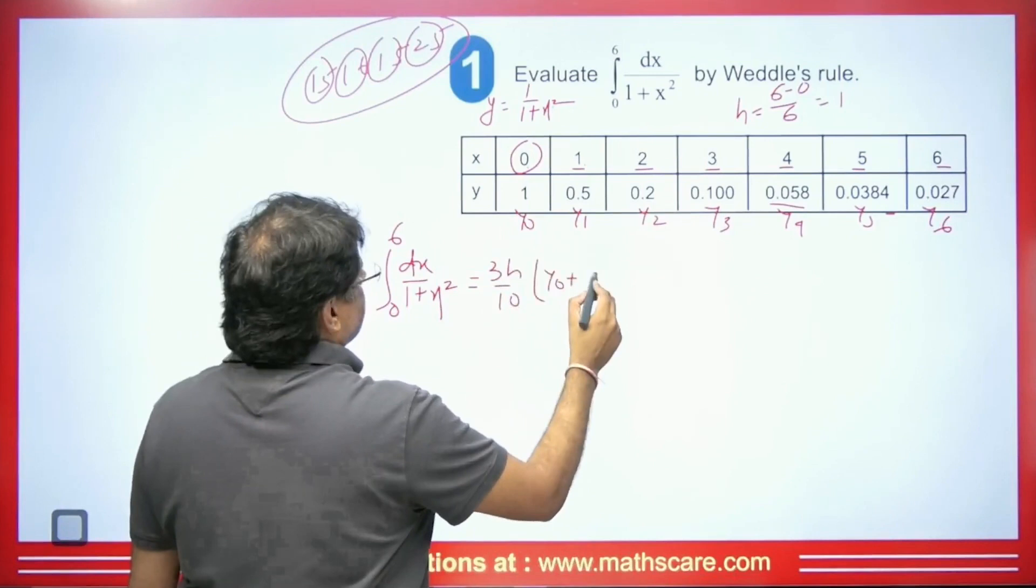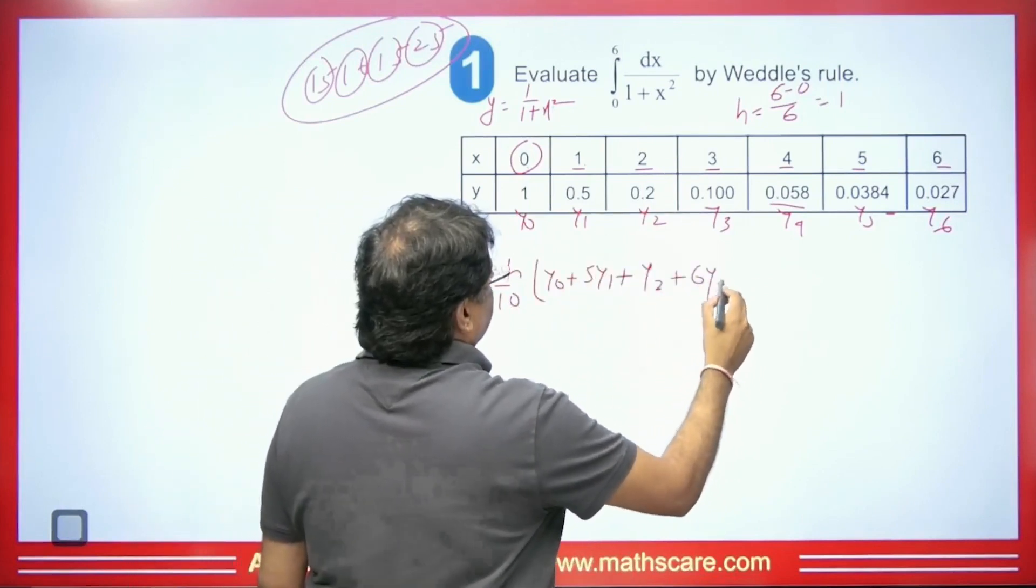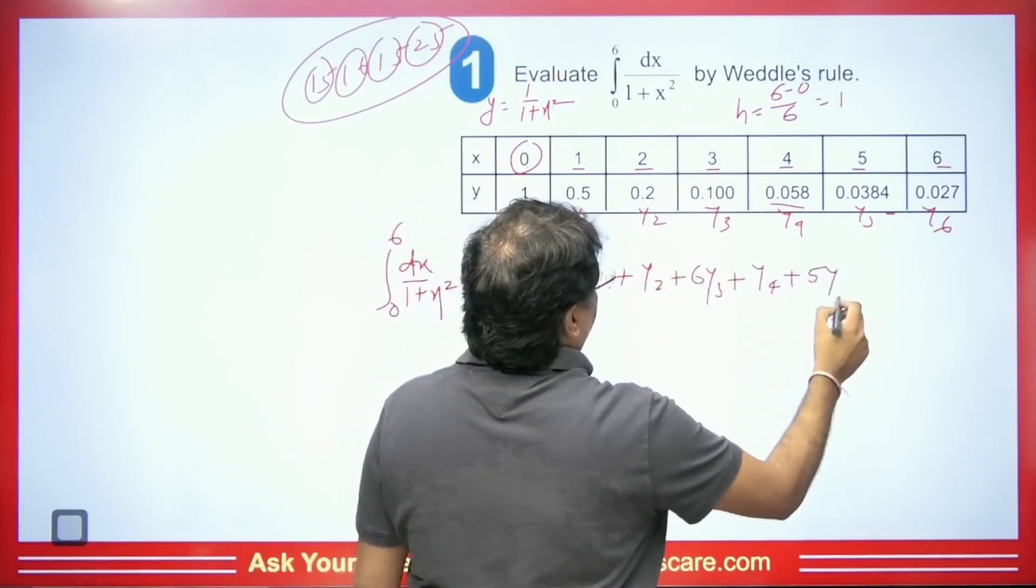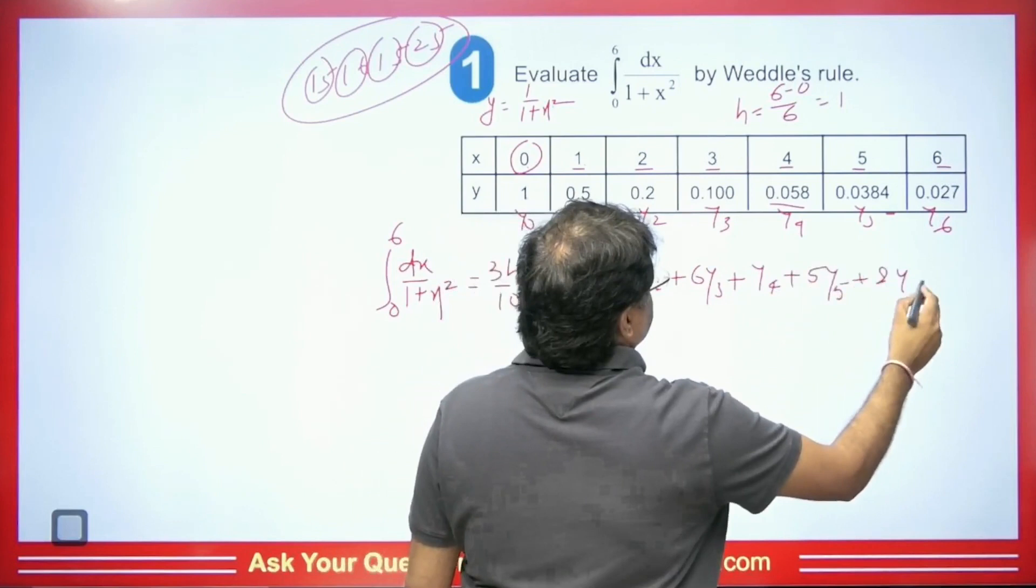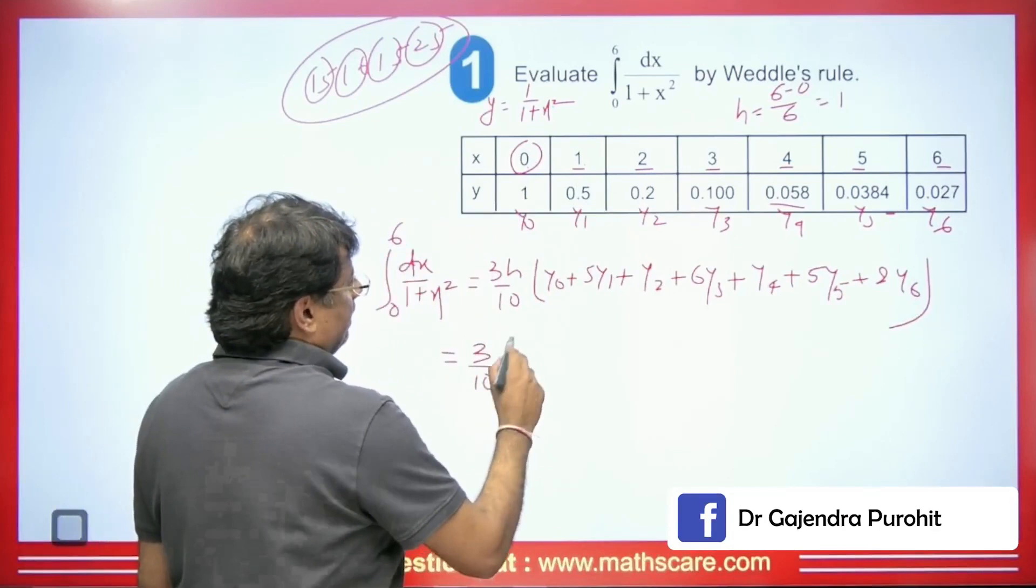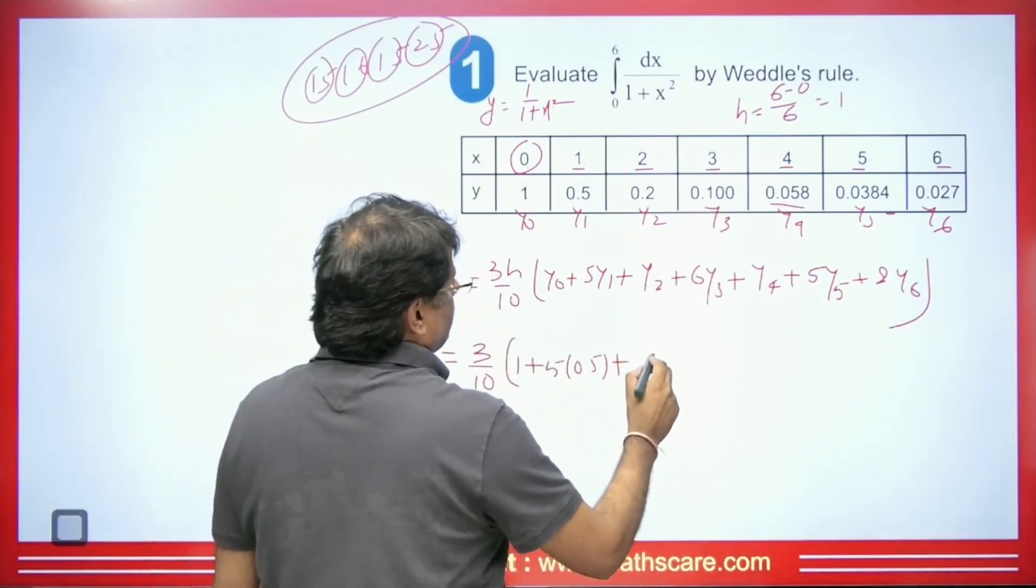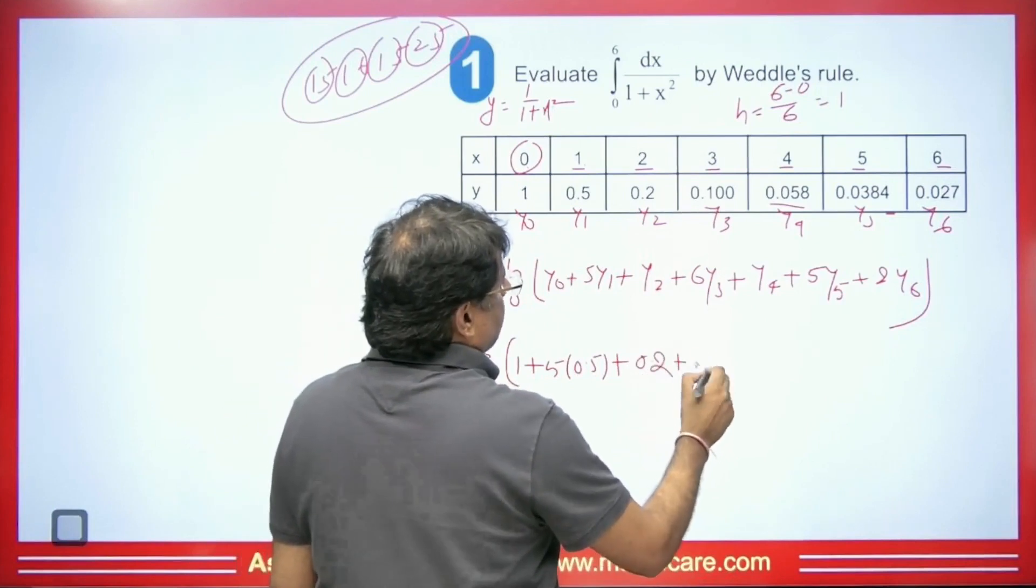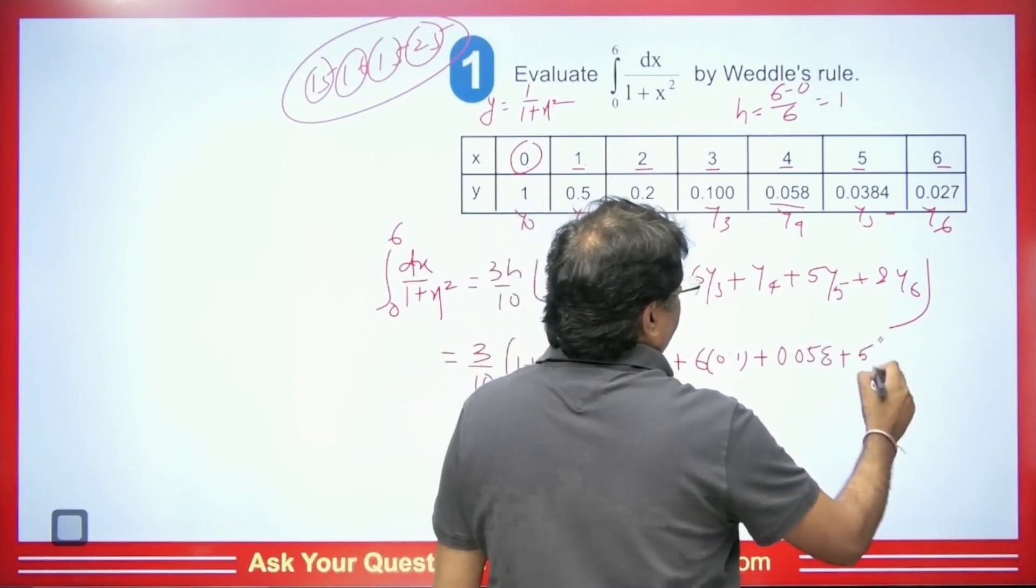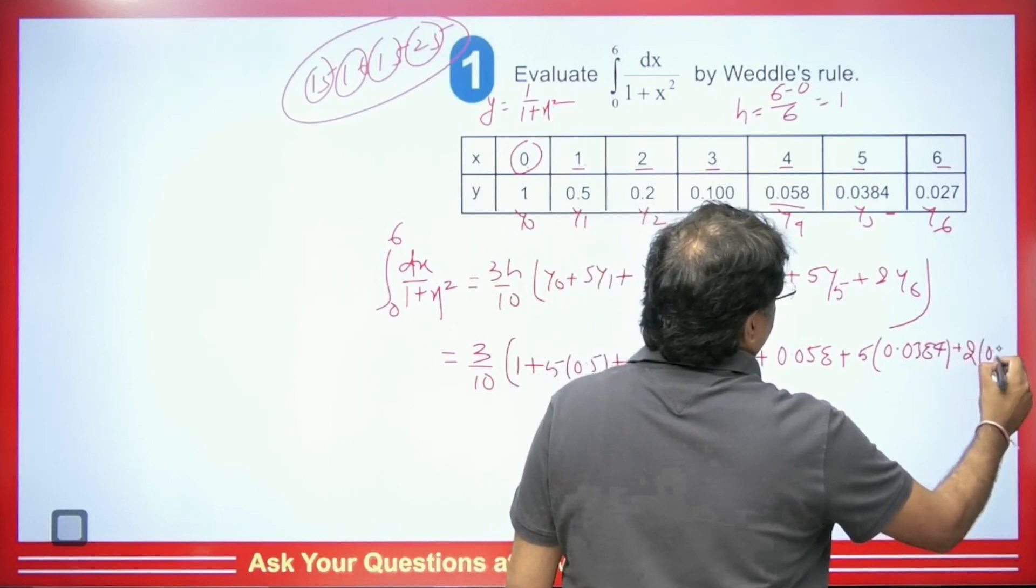Then what we will have here? We will have y₀ + 5y₁ + y₂ + 6y₃. Plus this will be y₄ + 5y₅ + 2y₆. So this will be the value, because we have to take till 6 only. Put all the values now and we have h as 1. This will be 3/10. The value of y₀ will be 1 + 5·0.5. Then here we will have plus 0.2 + 6·0.1 + 0.058 + 5·0.0384. Plus 2·0.027. So this will be our value.